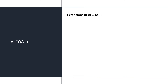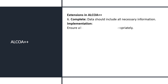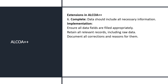The '++' extension means data should also be Complete, Consistent, Enduring, and Available. The sixth attribute is Complete. Complete means data should include all necessary information — nothing should be deleted or removed. For implementation: ensure all data fields are filled appropriately with no missing parts. Retain all relevant records including raw data, with all supporting data attached. Document all corrections and reasons for them, keeping original data available to check integrity.